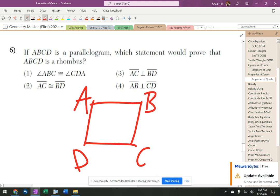I'm betting the diagonal is going to be perpendicular, alright. So angle ABC is congruent to angle CDA. That's already true, alright, already true for a parallelogram.